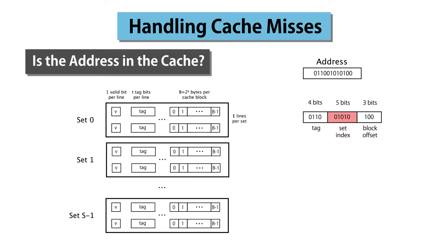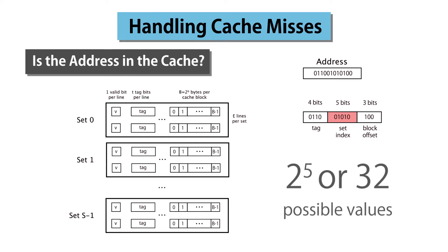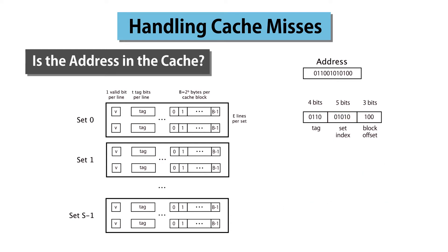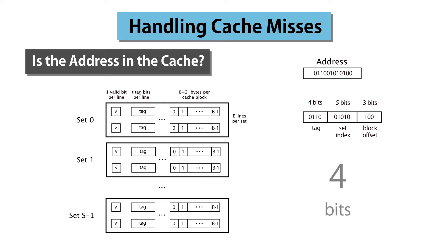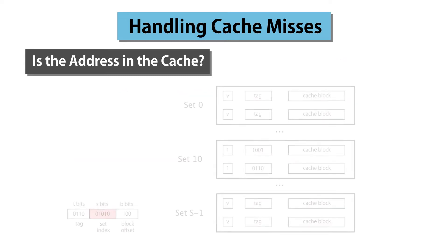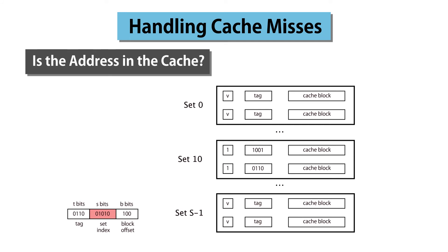The size of the set index tells us that our cache contains 2 to the 5, or 32 sets. The size of the block offset says that each line contains 2 to the 3, or 8 bytes of data. Each line also contains a tag of 4 bits, the same size as the tag field in an address. To determine whether the contents of an address are stored in the cache, we first use the set index to identify the set. In our example, the set index is 01010, or 10 in decimal. Thus, if this address is stored in the cache, it must be stored in set 10.